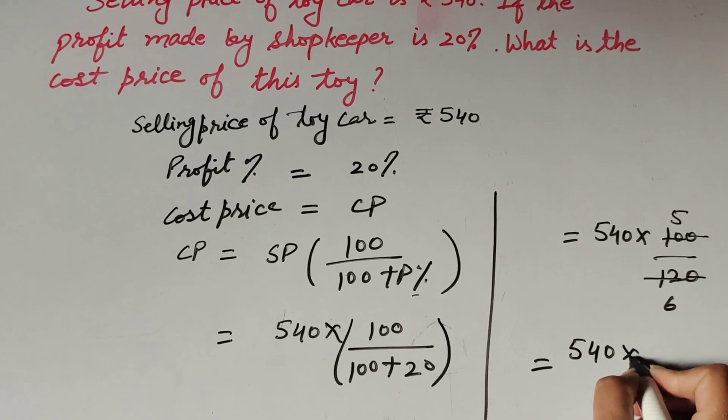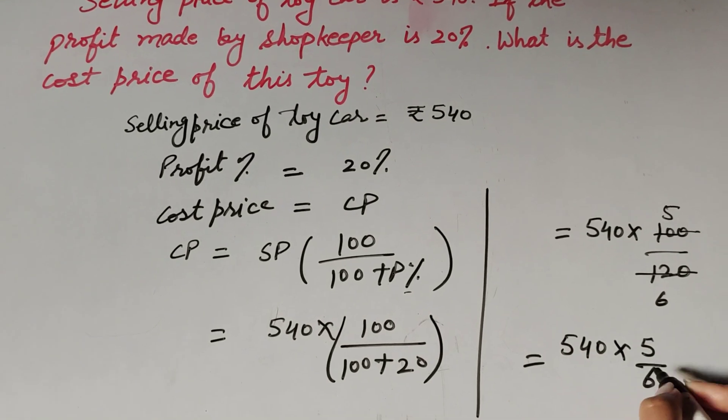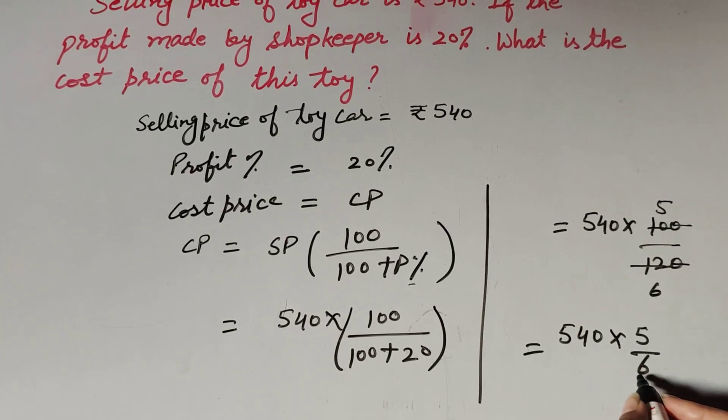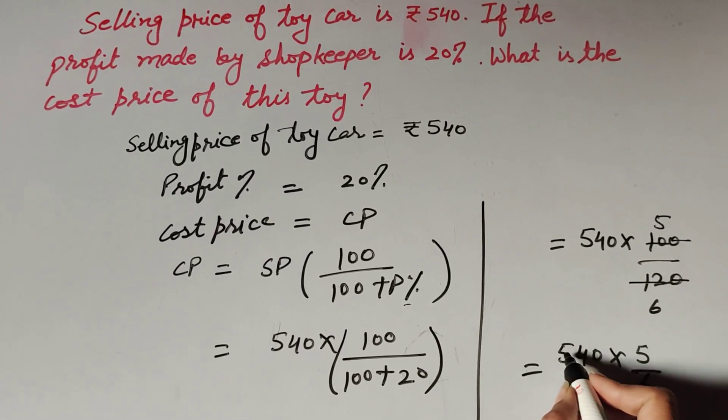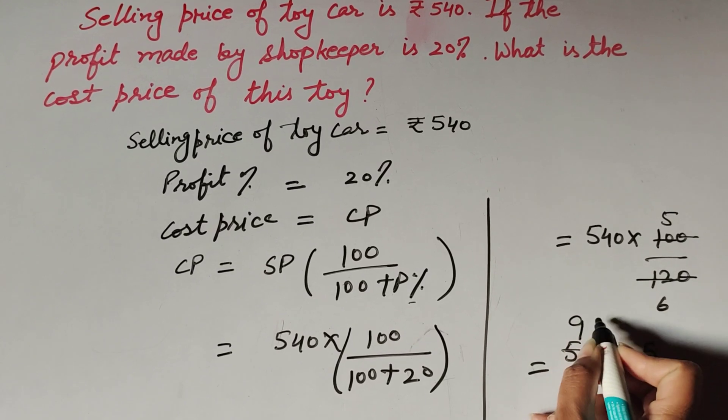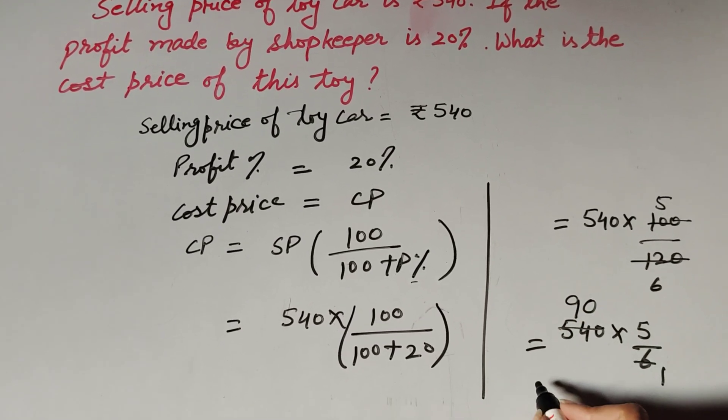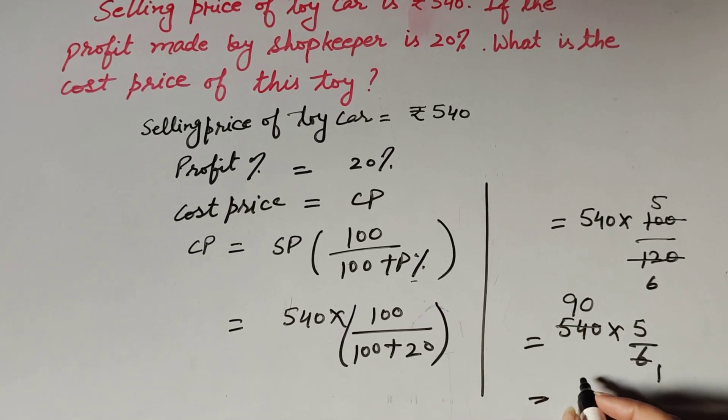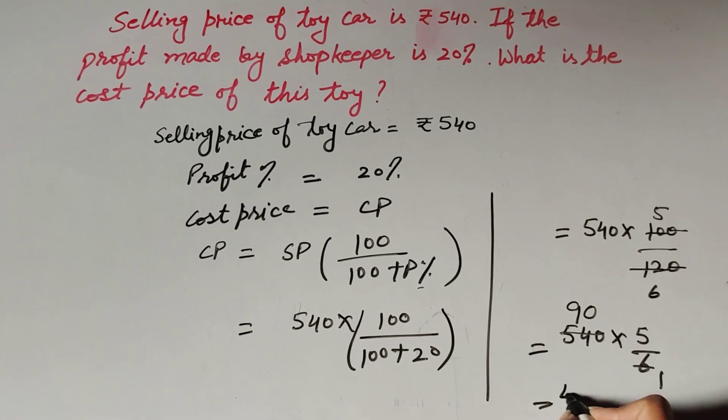540 multiply 5 over 6. Now 540 divide by 6, so 6 ones are 6, 90 sixes are 540. 90 multiply by 5, it is equal to 450.